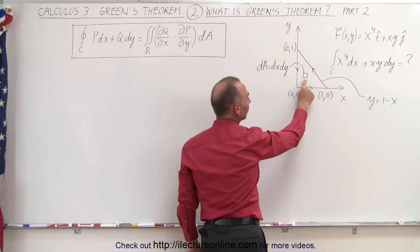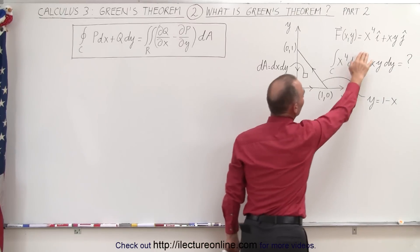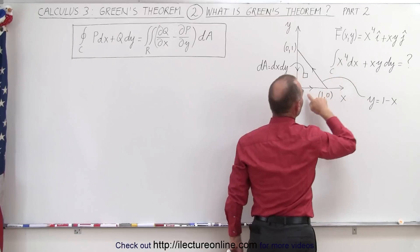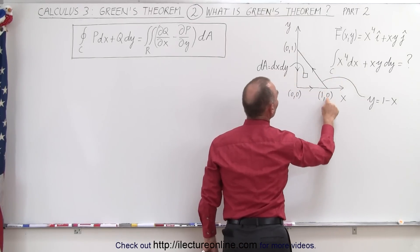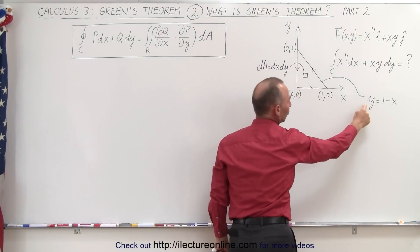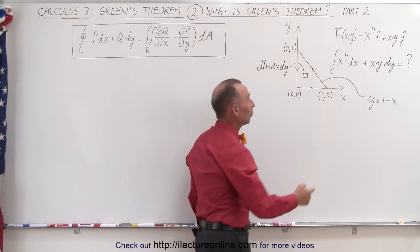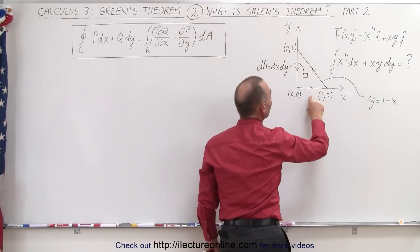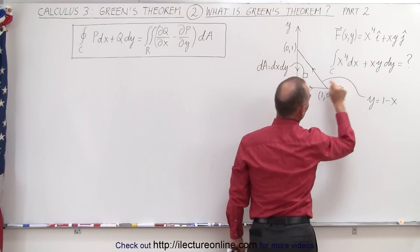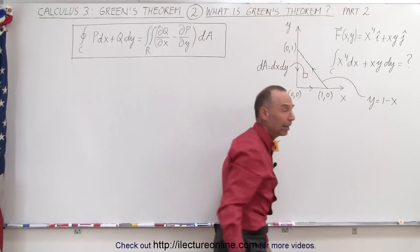Here we have a small area element defined by dx times dy, and here's the vector field over which we're going to do the line integral from (0,0) to (1,0) to (0,1) and back to (0,0). This line is defined by the function y equals 1 minus x. The line integral over this region would have to be done three times over each of the three curves and then added together.